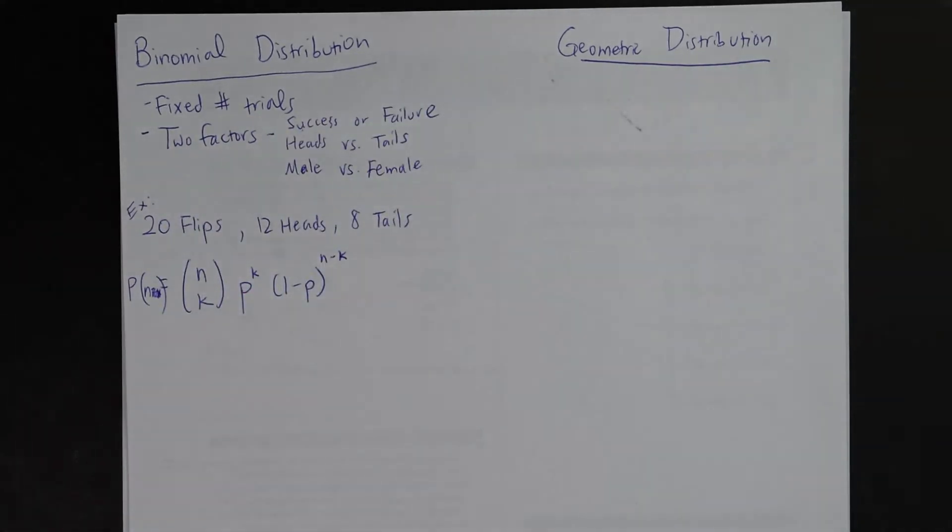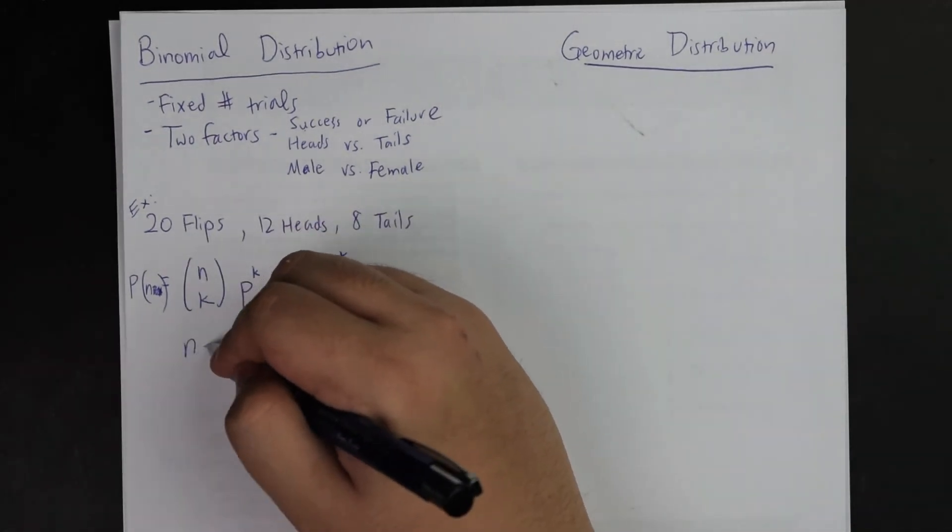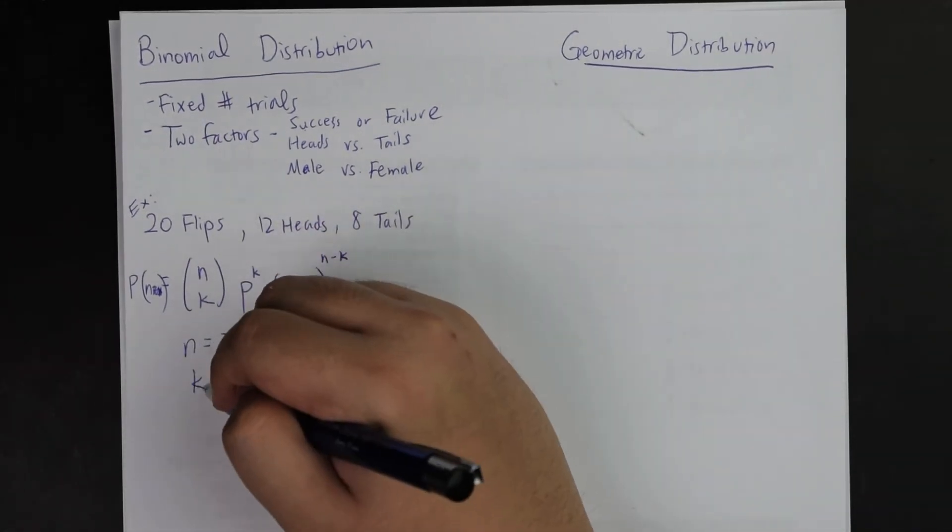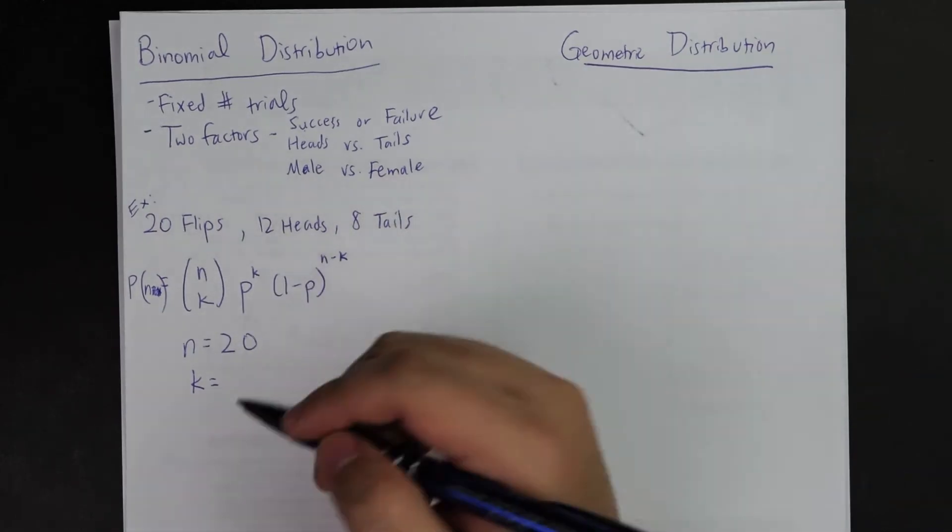The point is that for this equation right here, this is the usual equation we use for binomial distribution. We have to understand that there are fixed number of trials and that these values, 12 and 8, will go into these specific categories. With n, for this example, being equal to 20, k you could define as your choice, you could do 12 or 8, but let's say it is 12.